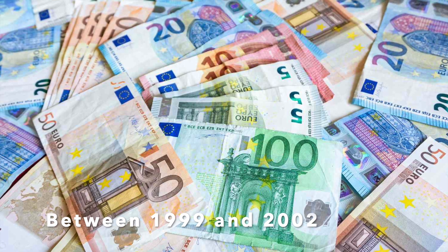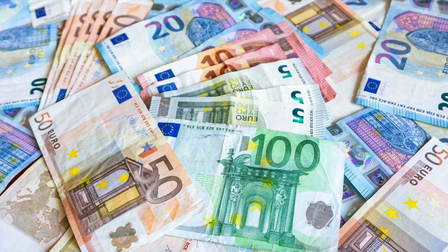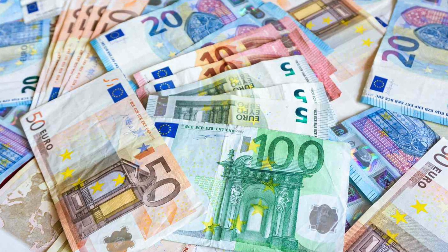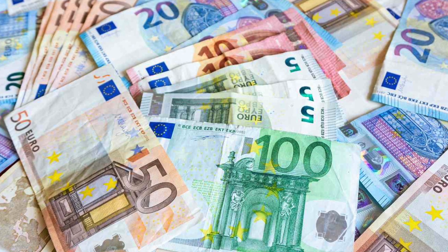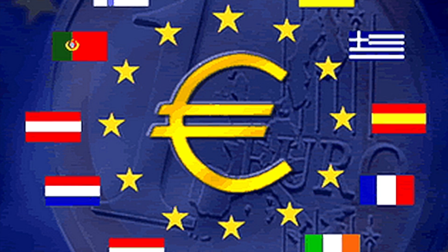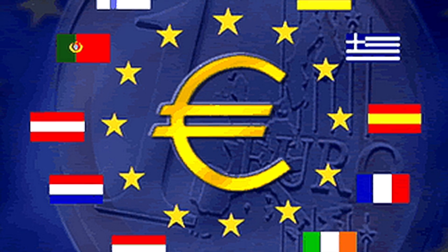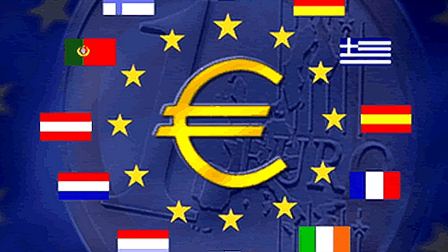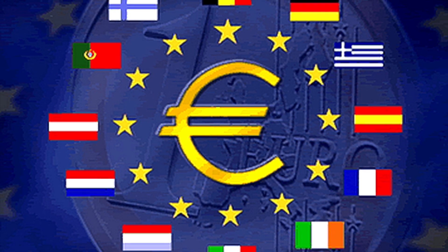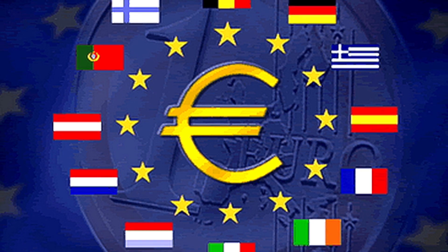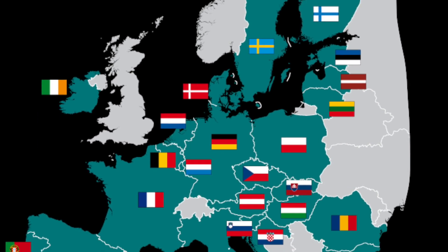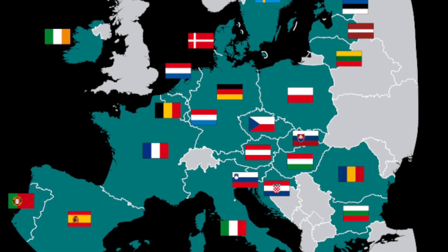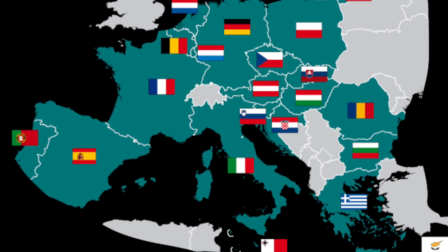Between 1999 and 2002, the population had to adapt to using two different currencies simultaneously. Then, on January 1st of 2002, the euro was finally established as a new currency in many European countries, and the population had a limited period to exchange their previous currency for the new European one. Do you remember all the former currencies before the euro? We will mention some of them, but we need your help — please write in the comments if you remember any of the old currencies.